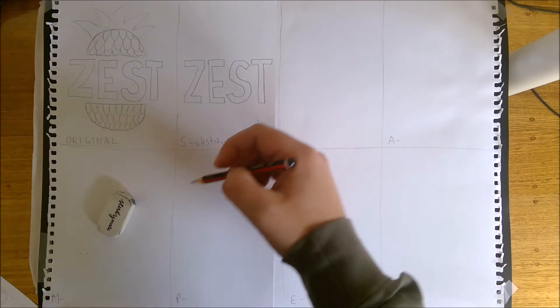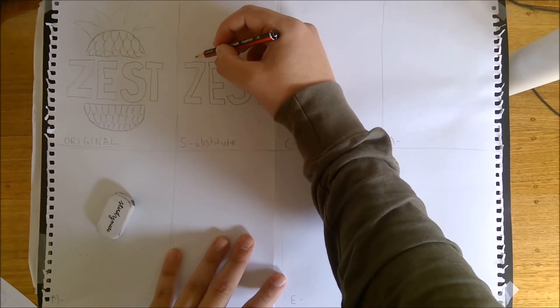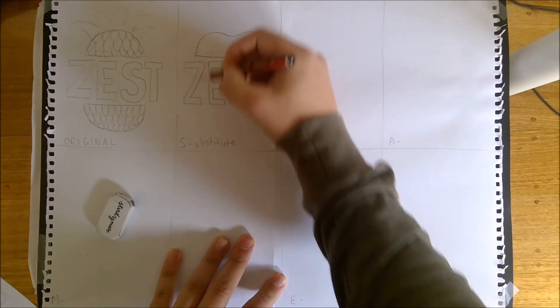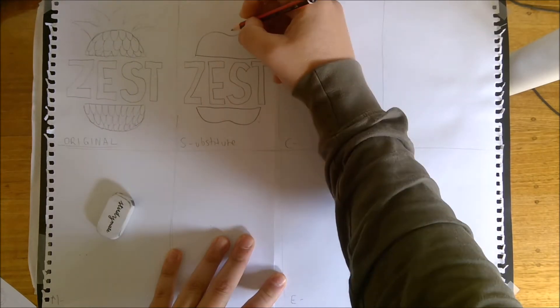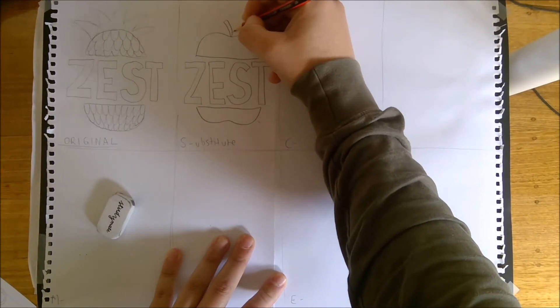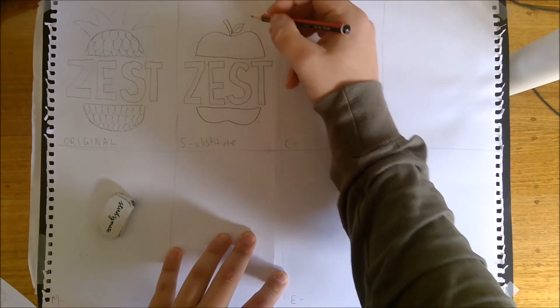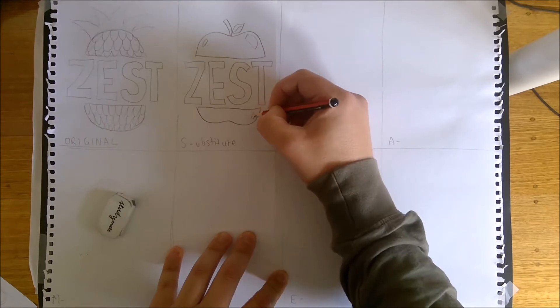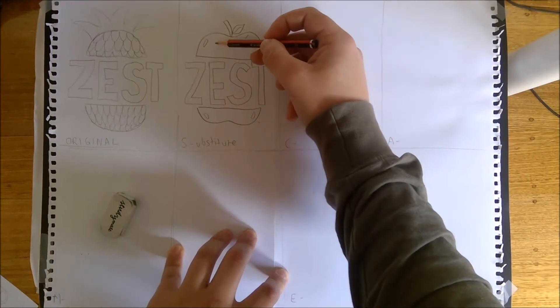I'll add the color later on. So I draw out the word Zest, and instead of having a pineapple as part of the design, I'm going to use a different fruit. This time I'm going to use the top of an apple as well as the bottom of an apple. To make it really clear, I'll have a little stalk, maybe even a little leaf, and then I can add in spots for reflection that I can color in later. So I've taken the original design and substituted the apple from the pineapple.